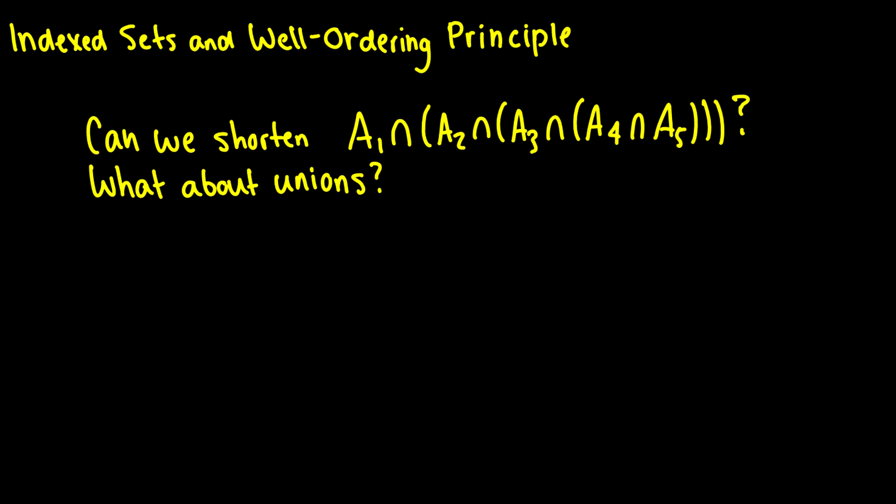This is more like a way to write things in a shorter fashion than having to write out a whole bunch of operations. For instance, our question here is, can we shorten the intersection of A1 with the intersection of A2 and A3 and A4 and A5, and this could have an infinite amount of sets? And the answer is yes, of course we have notation for that.